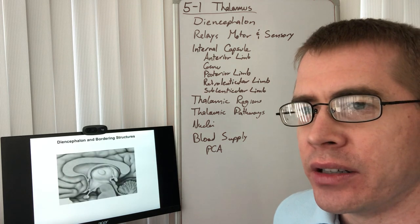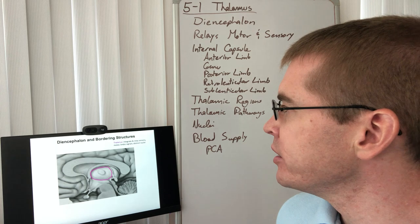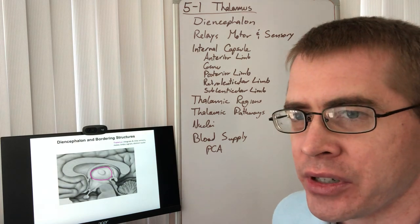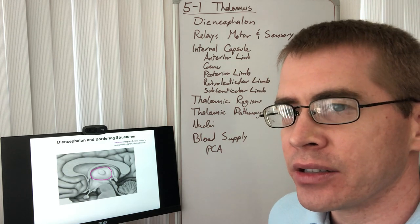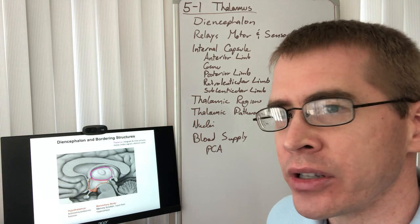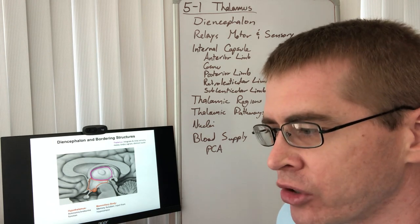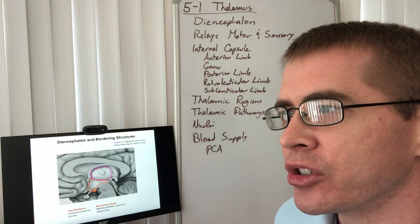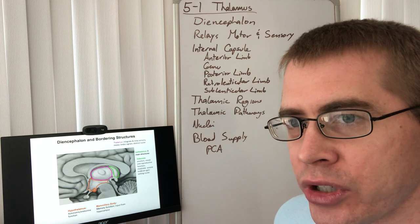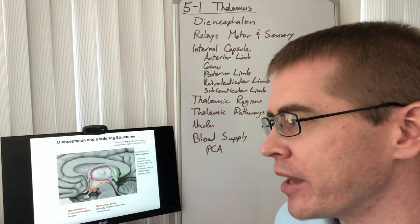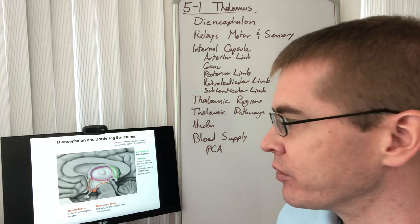Let's take a look at the diencephalon and all of its surrounding structures. The thalamus is outlined here in purple. Below the thalamus we find the hypothalamus with the mammillary bodies. The mammillary bodies are tightly associated with the hippocampus. The fornix connects through a bilateral, bidirectional pathway the hippocampus with the mammillary bodies for encoding memory.